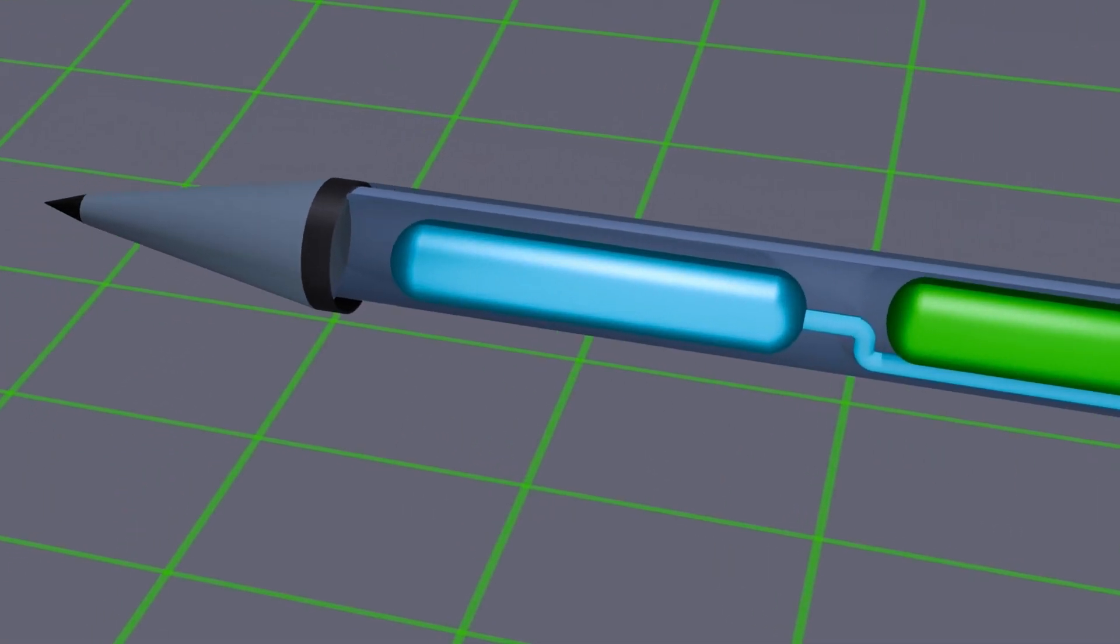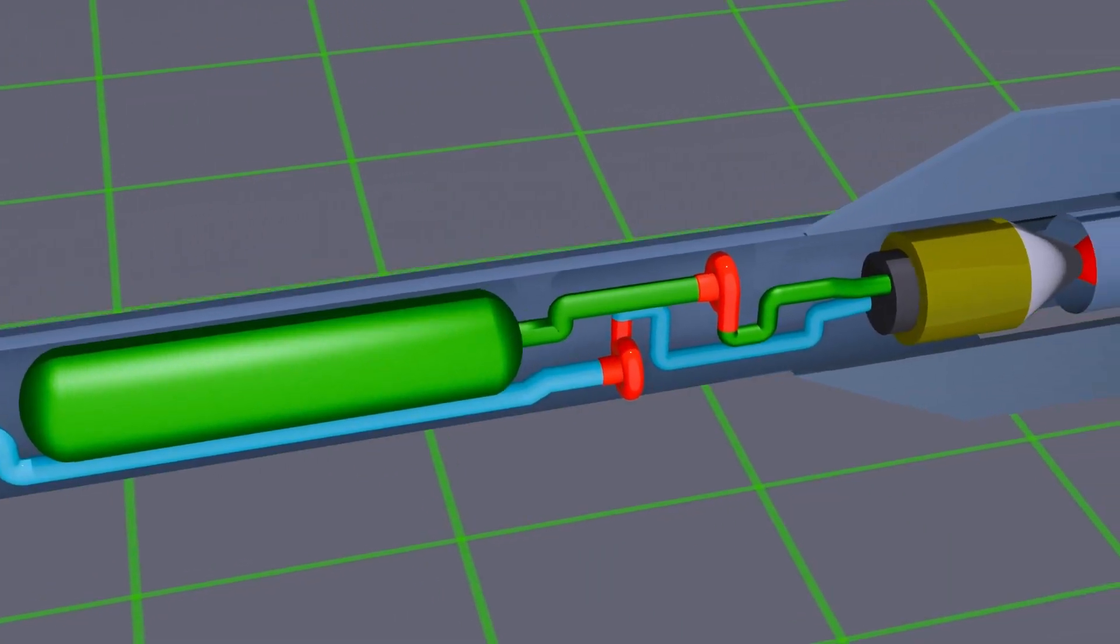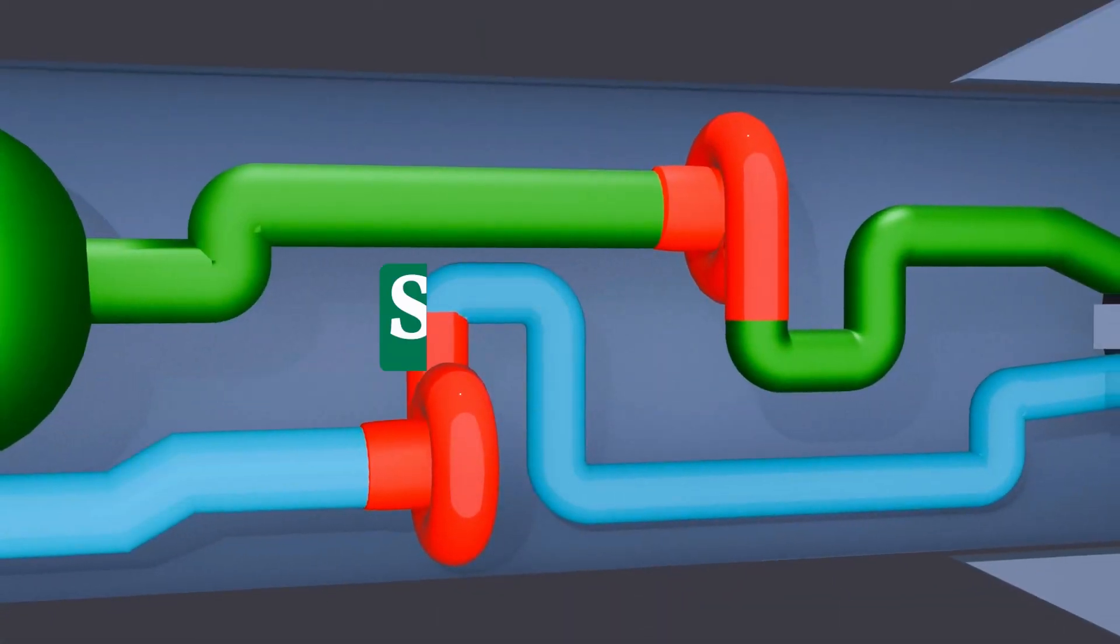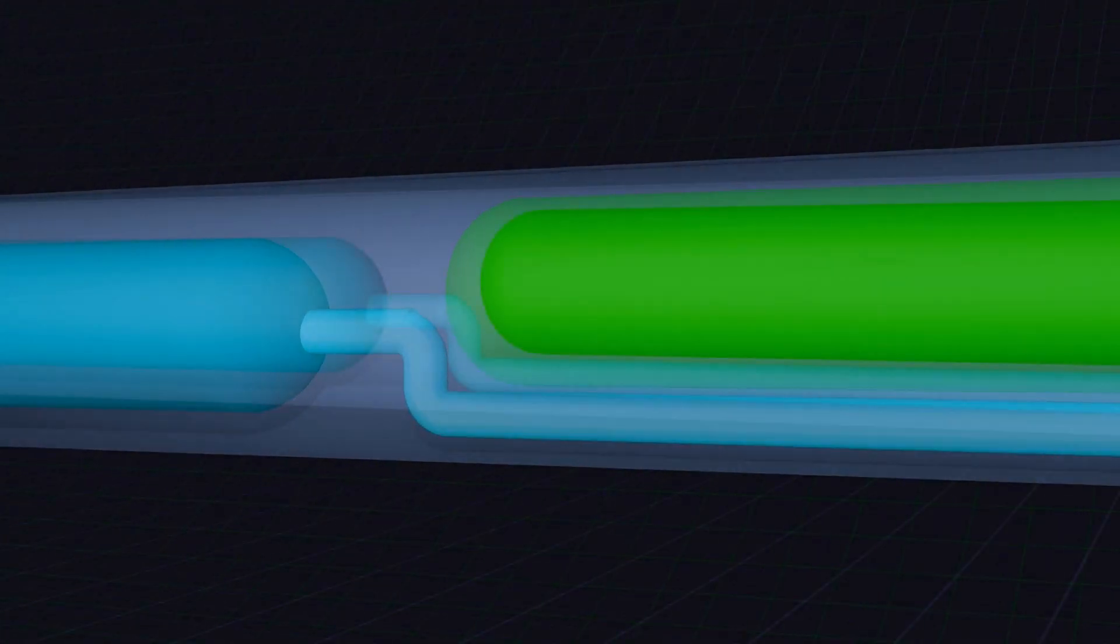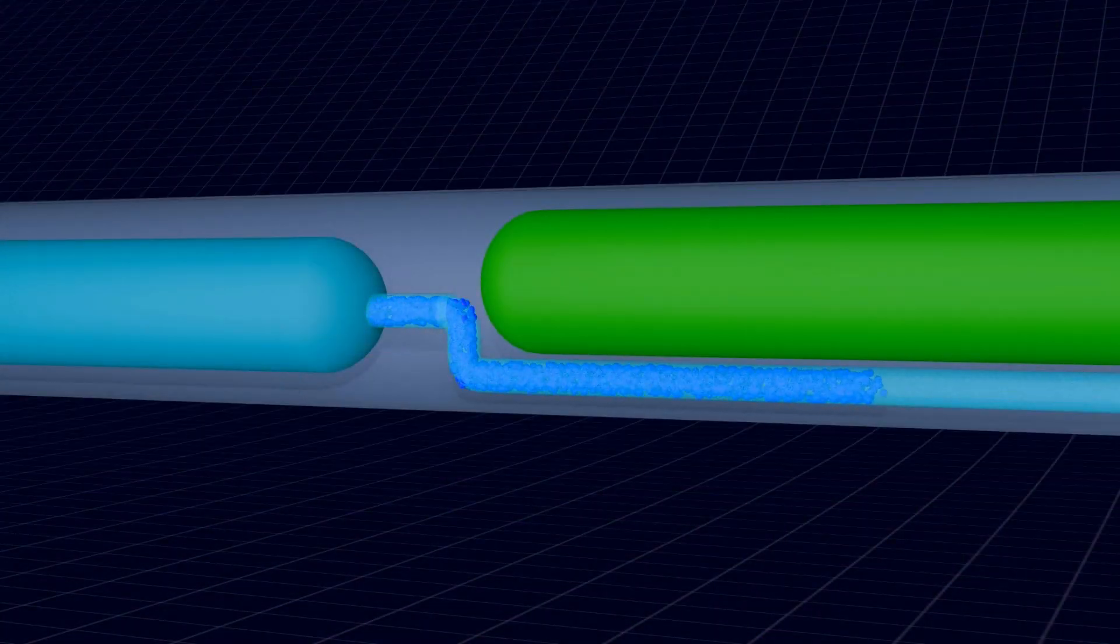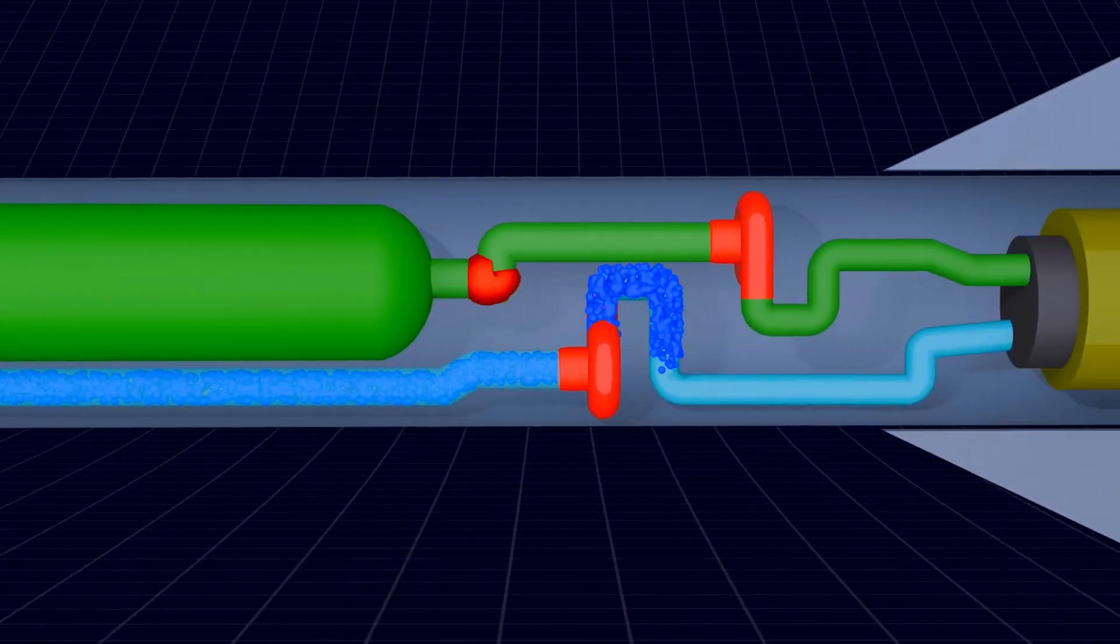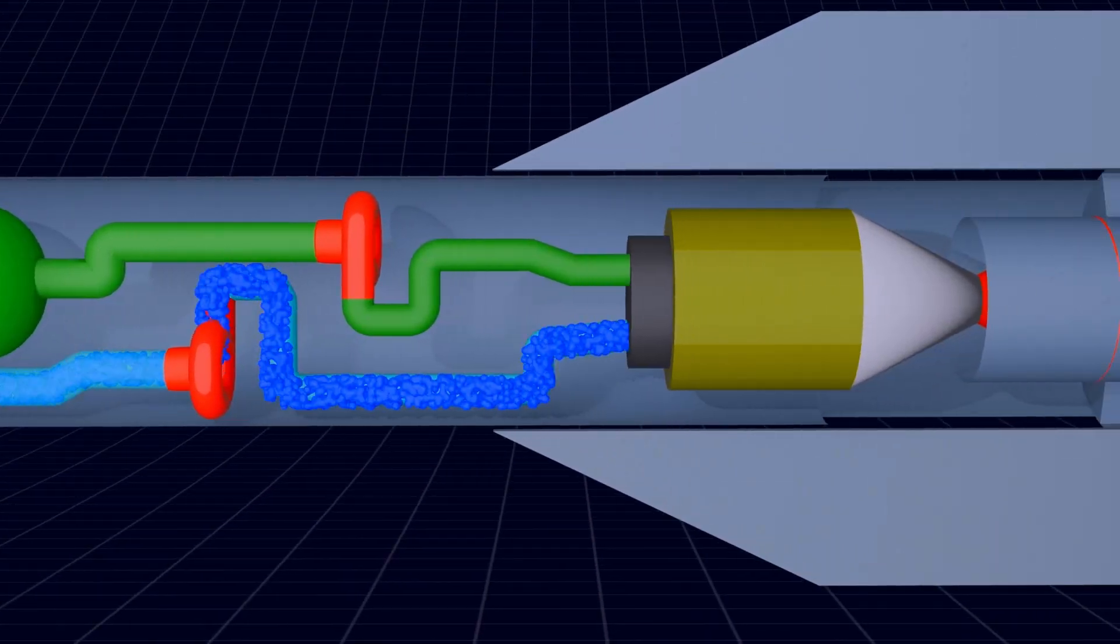Now, let's see how a liquid fuel missile actually works. Step 1: The turbo pumps are started. As a result, fuel from the fuel tank and oxidizer from the oxidizer tank are sent to the injector.